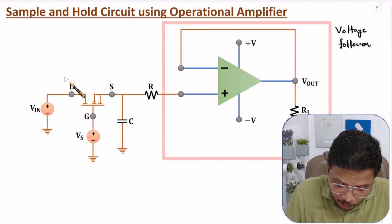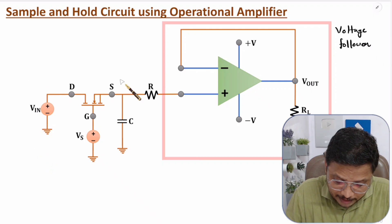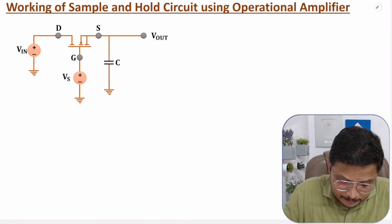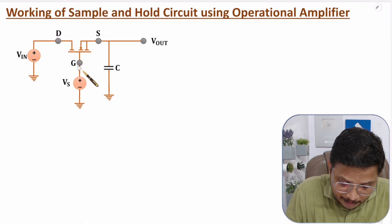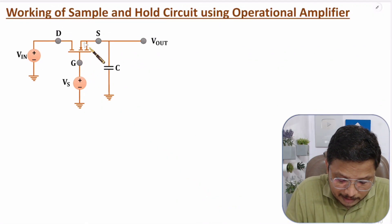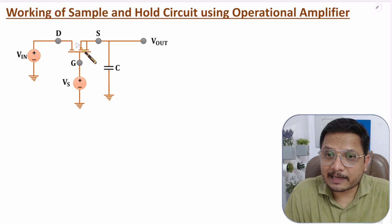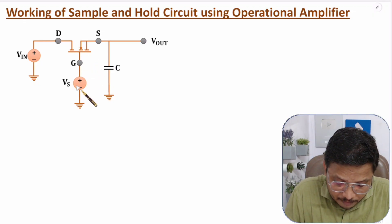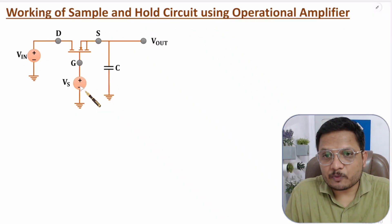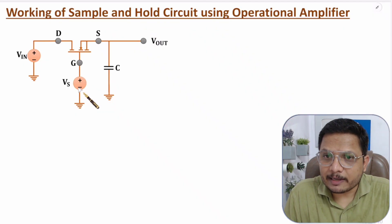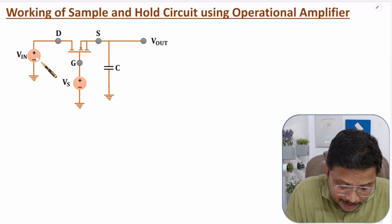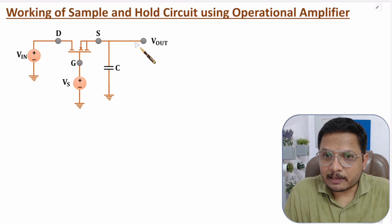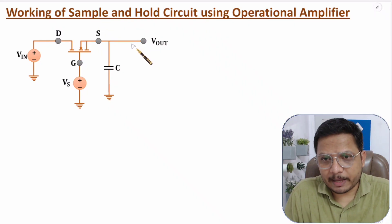We need to understand how this portion of the circuit is functioning. If you observe here, we have a MOSFET, and this MOSFET is functioning like a switch. At the gate terminal of this MOSFET, we provide the VS signal, which is the sampled signal. At the drain terminal, we give the input signal, and at the output we will have the sample and hold output.